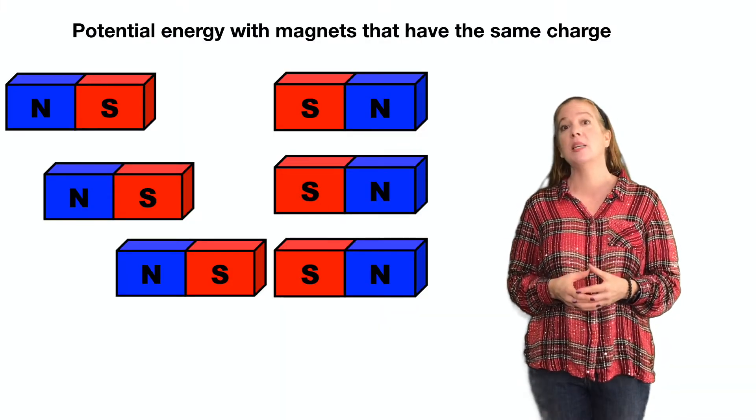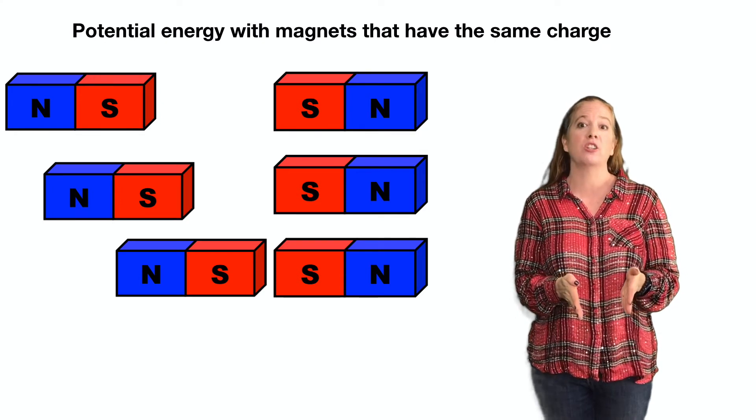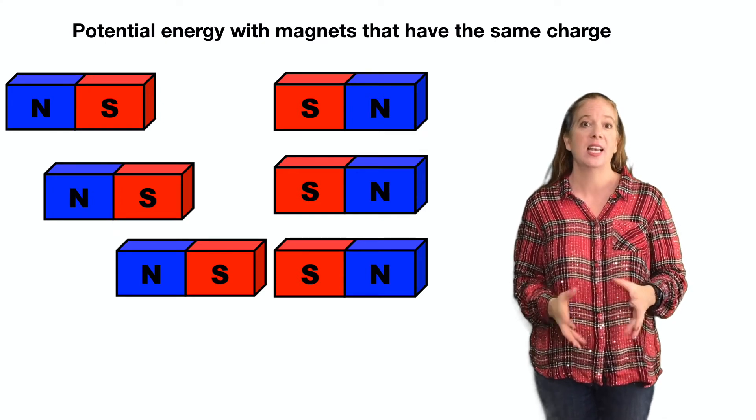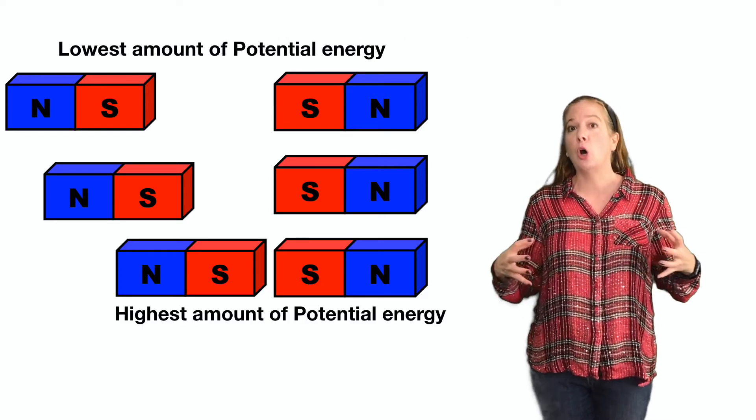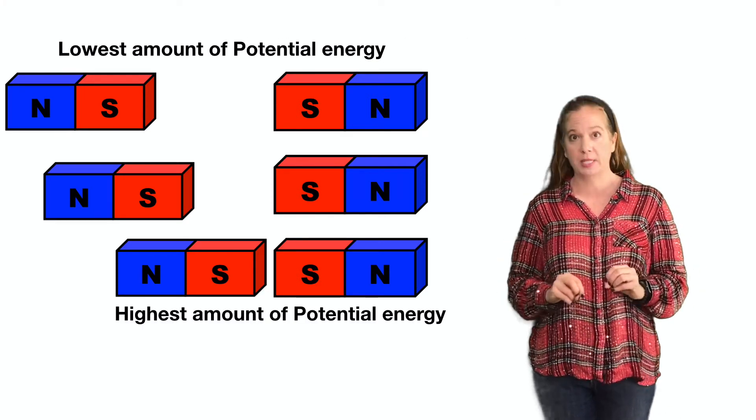As magnets with similar charges get closer together, the actual amount of potential energy increases. That's because they don't want to touch. So the closer the magnets with like charges are, the greater the potential energy.